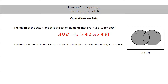Speaking of intersection, the intersection of A and B is the set of elements that are simultaneously in A and B. Symbolically, we have A intersect B is equal to the set of X such that X is in A and X is in B.